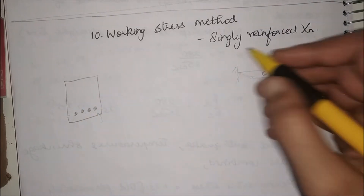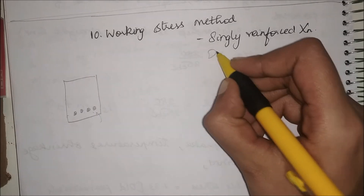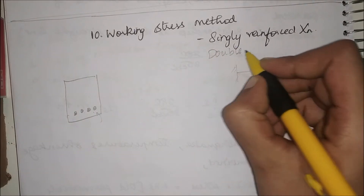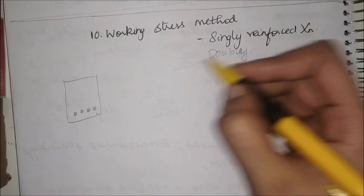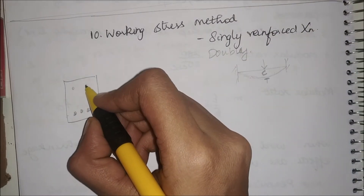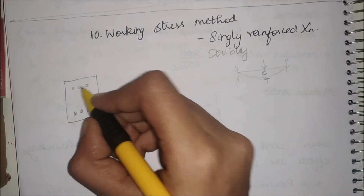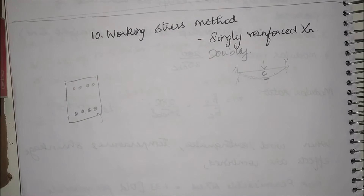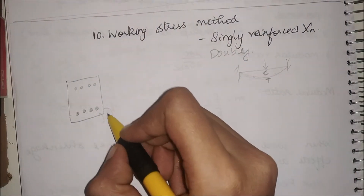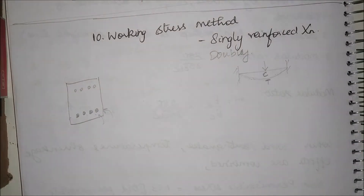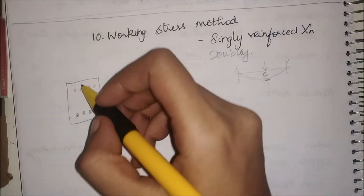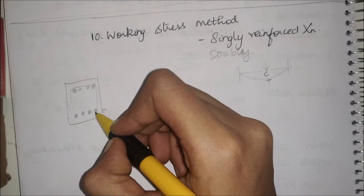Singly reinforced sections have steel only in the tension zone. There is another type of section called doubly reinforced, where we have stirrups at the top also. But usually, even if singly reinforced sections satisfy the need, we will go for bars at the top so that we can tie them together.